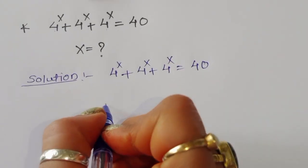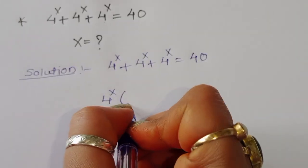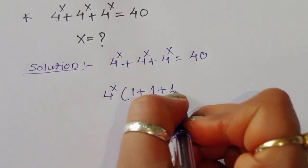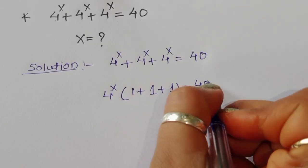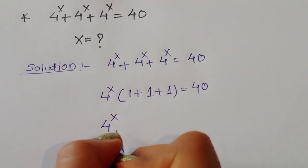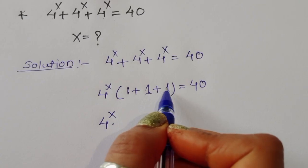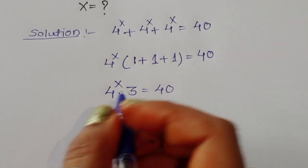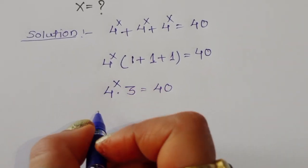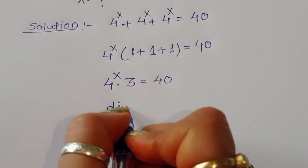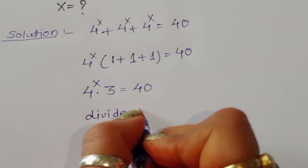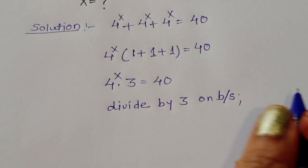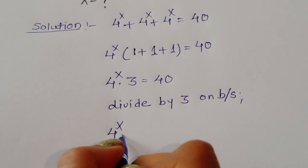We can take 4^x common here. So we can write 4^x times (1 plus 1 plus 1) is equal to 40. Now 4^x times 3 is equal to 40. To remove the 3, we can divide both sides by 3.